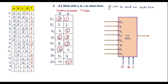After writing the implementation table: if both values in a row are circled, the data line value is D + D̄ = 1. If neither value is circled, the value is 0. If only the D column is circled, the value is D. If only the D̄ column is circled, the value is D̄. These rules determine what to connect to each data line.